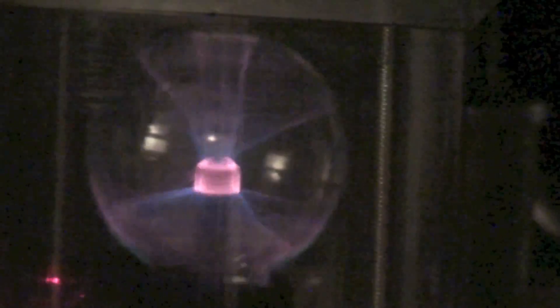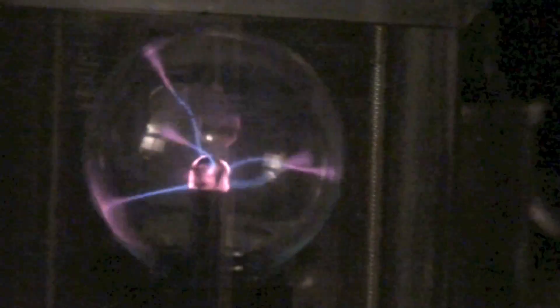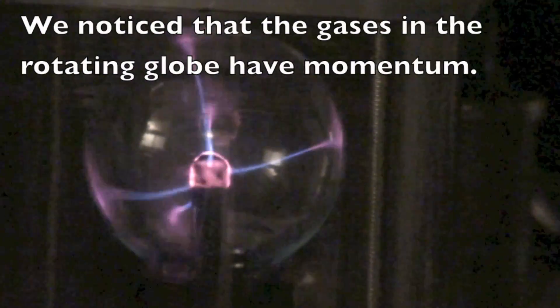So we'll take it up to maybe 500 RPM, something like that. Okay, I'll just stop it and we'll see what happens. Motor stop. And you can see the plasma keeps rotating for a revolution or two before it settles down.